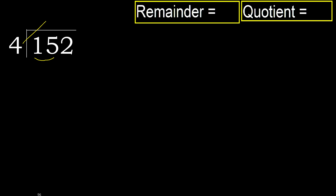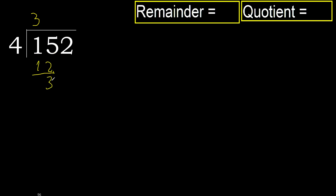15, but not greater. 4 multiplied by 4 is 16 — 16 is greater. 4 multiplied by 3 is 12 — 12 is not greater. Ok, subtract. 3.